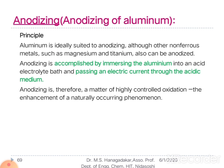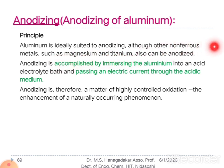Now let us discuss the principle involved in the anodization of aluminium. Aluminium is ideally suited to anodizing, although other non-ferrous metals can also be anodized. Anodizing is accomplished by immersing the aluminium article into the acid electrolyte bath and passing an electric current through the acidic medium. Anodizing is therefore a matter of highly controlled oxidation — the enhancement of a naturally occurring phenomenon.